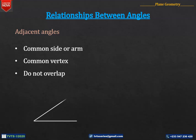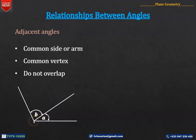So, if we have these two angles A and B, then A and B are adjacent to each other because they have a common arm or side and a common vertex and they do not overlap. If there is an overlapping, then the two angles are not adjacent to each other.